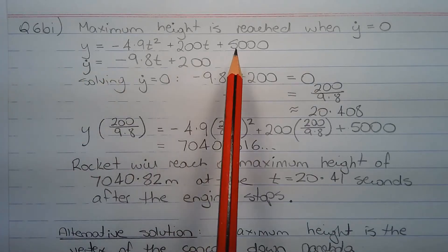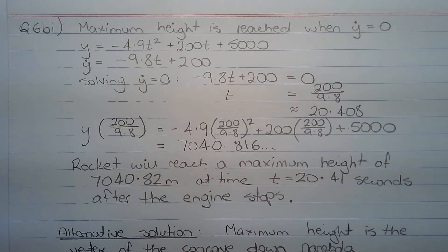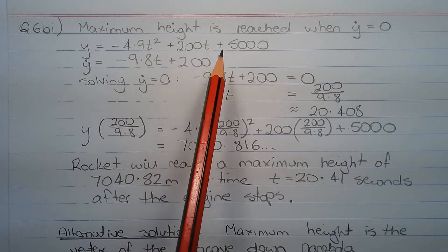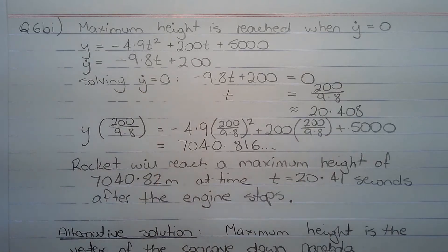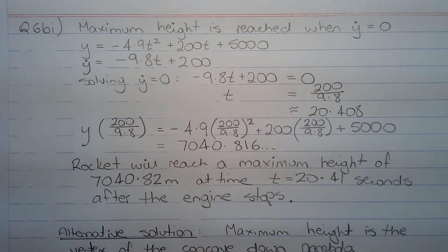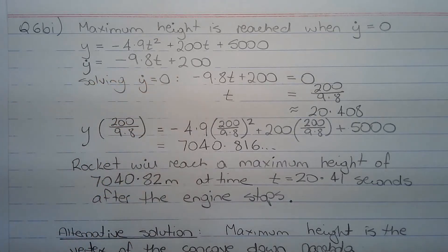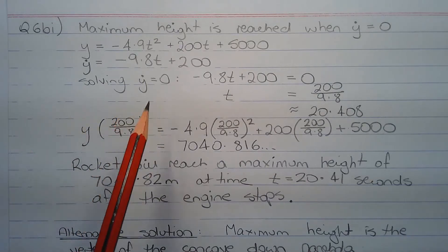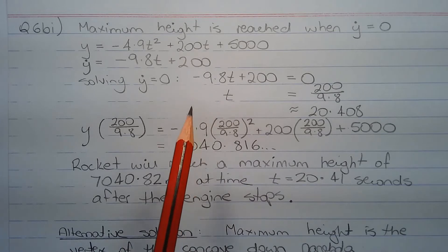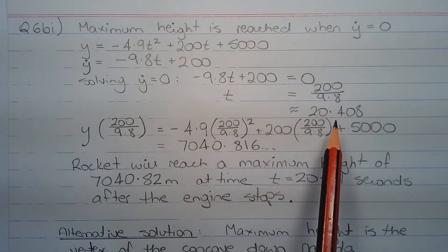The maximum height is reached when the velocity in the vertical direction, y dot, equals 0. Now y equals negative 4.9t squared plus 200t plus 5000. Differentiating this, we get the equation for velocity in the vertical direction: y dot equals negative 9.8t plus 200. Solving y dot equals 0, that is negative 9.8t plus 200 equals 0, we get t equals 200 over 9.8, which is approximately 20.408.